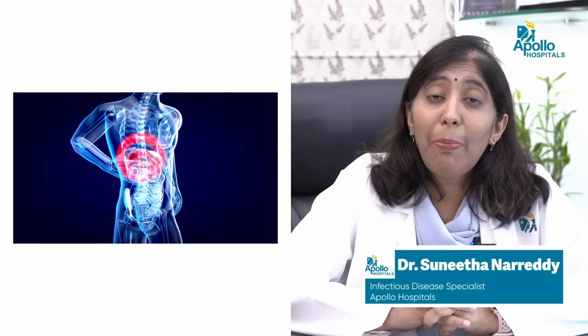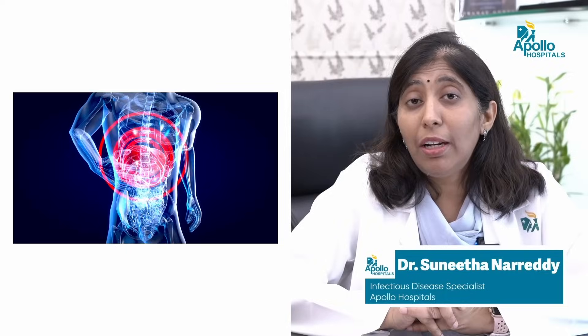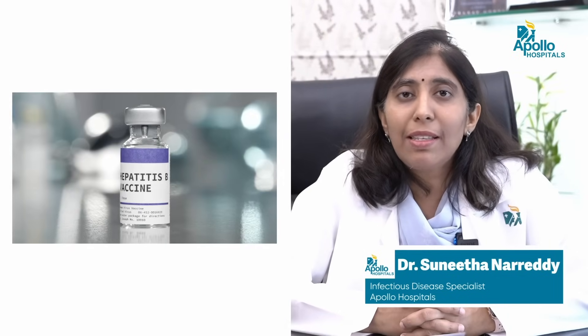However, if the condition is picked up earlier, there are other modalities of treatment, including medications that can remove the virus from the body. For liver cancer, resection of the affected part of the liver can also be a modality of treatment. Another complication that can occur in chronic liver disease is fulminant hepatitis B, where you can have severe life-threatening liver disease with elevated liver function tests, which may also require liver transplantation.